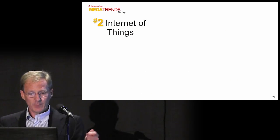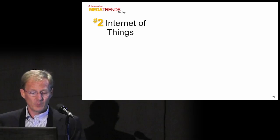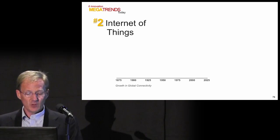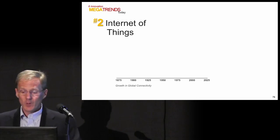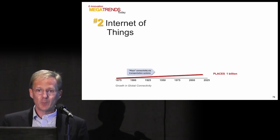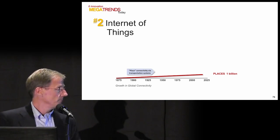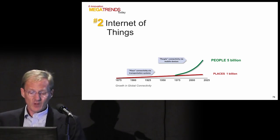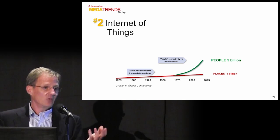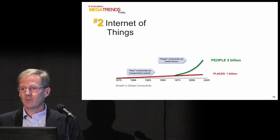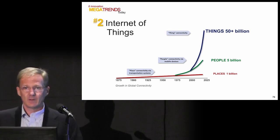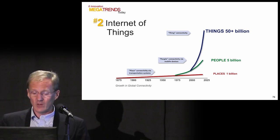Trend number two is the Internet of Things. In the beginning of the 1800s, there was a good chance you lived your whole life without ever leaving your village. The first connectivity on the globe was transportation systems — in that hundred years, locomotives, steamships, trains, automobiles, and airplanes really connected all places on the planet. The next level of connectivity was people connectivity, through mobile devices — largely Steve Jobs and his era — literally connecting every person on the planet in the last ten years. And now the big wave is to connect all the things on the planet.